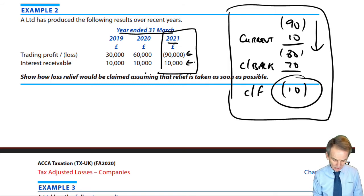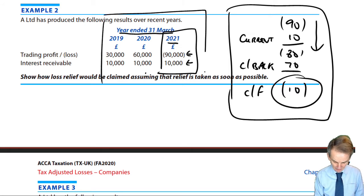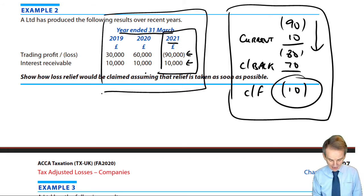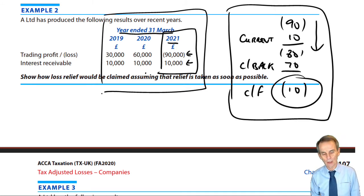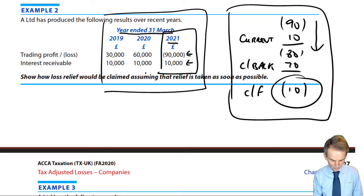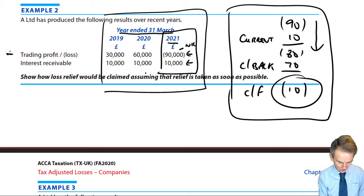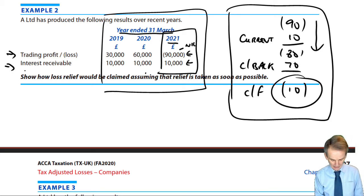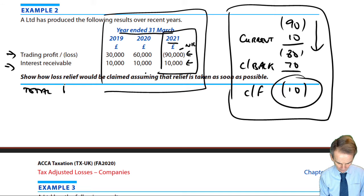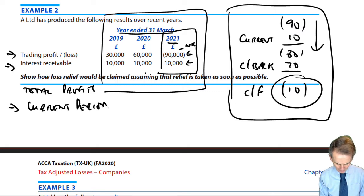So we would set up one computation showing the relevant accounting periods in columnar fashion, entering the information from the question into our answer. This would be a section C question that we would be dealing with. The only difference to what you see in the question is that the loss becomes a nil assessment, and we would want to have established the total profits after each of those two figures were recorded. After those total profits, you would then be able to show firstly the current period relief, and secondly the carry back relief.